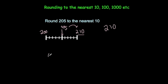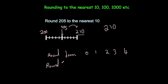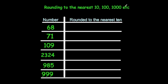So you round down if the units digit ends in a 0, 1, 2, 3 or 4. And you round up if it ends in a 5, 6, 7, 8 or 9. That's the rule whenever you're rounding to the nearest 10 and you look at the units digit. So let's have a look at some questions.